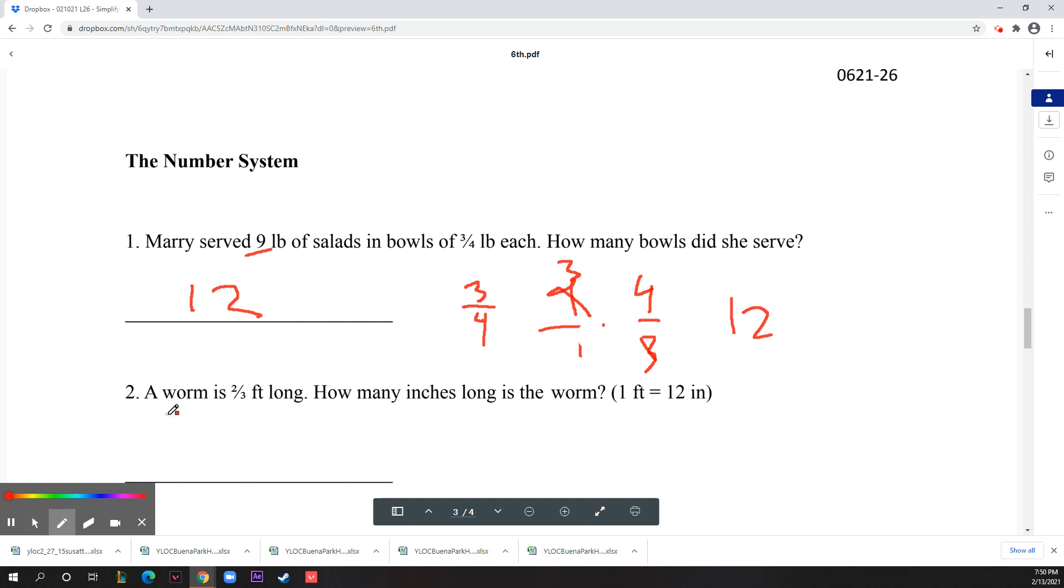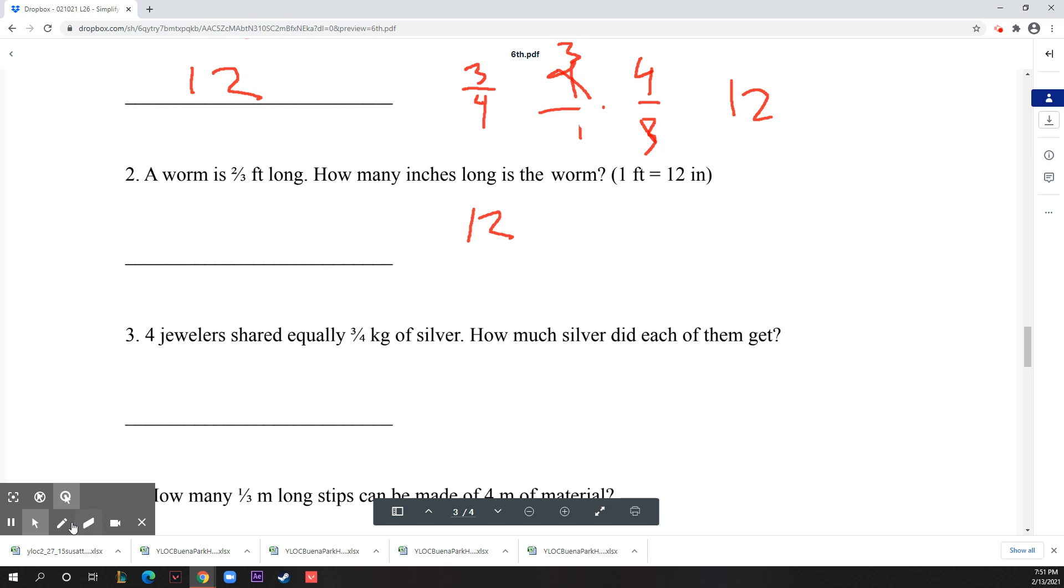Number two: a worm is two thirds of a foot long. How many inches long is the worm? One foot is 12 inches, and you just need to multiply it by two thirds. So it's 12 over 1 times 2 over 3. Divide this - 4 times 2 is 8. It's 8 inches long. Two thirds of 12 is 8.